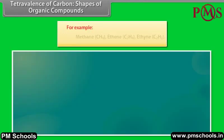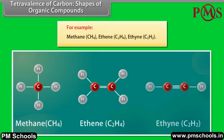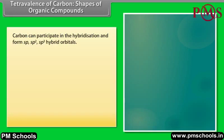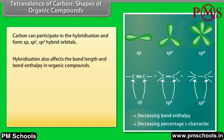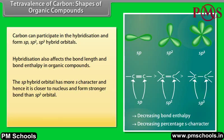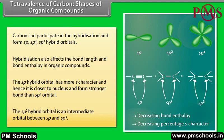For example, methane, ethane. Carbon can participate in hybridization and form sp, sp2, sp3 hybrid orbitals. Hybridization also affects the bond length and bond enthalpy in organic compounds. The sp hybrid orbital has more s character and hence is closer to the nucleus and forms a stronger bond than sp3 orbital. The sp2 hybrid orbital is an intermediate orbital between sp and sp3.